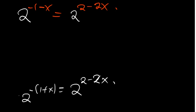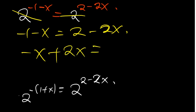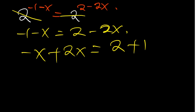Since the bases are the same, we can equate the powers. So negative 1 minus x equals 2 minus 2x. Rearranging: negative x plus 2x equals 2 plus 1. That gives x equals 3.